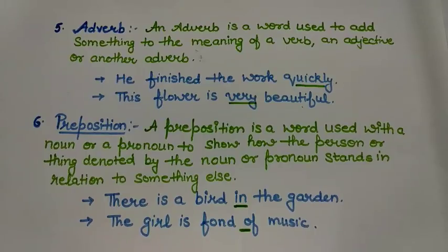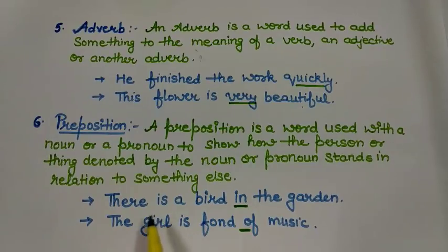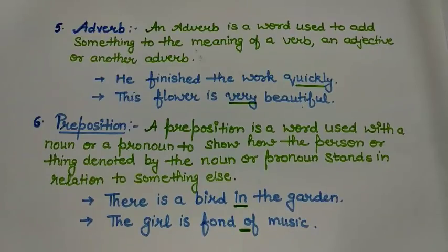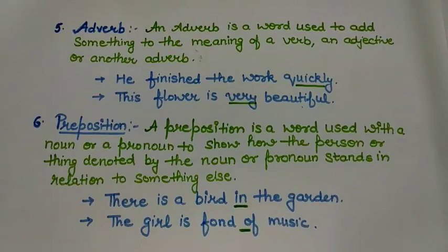The next part of speech is preposition. A preposition is a word used with a noun or pronoun to show how the person or thing denoted by the noun or pronoun stands in relation to something else. That means a preposition shows the relation or state of something. For example, 'There is a bird in the garden' — 'in' denotes the location of the bird. 'The girl is fond of music' — 'of' is the preposition here, connecting 'fond' and 'music.' Prepositions are used with nouns or pronouns to show relation.